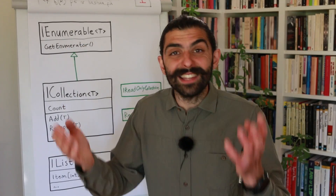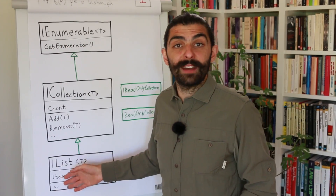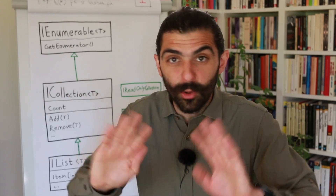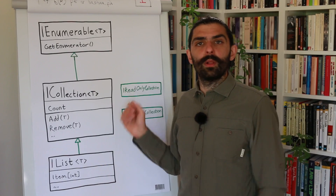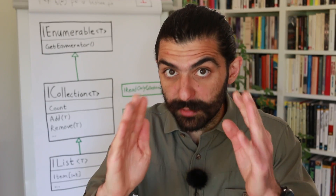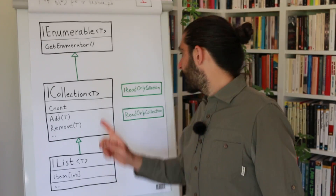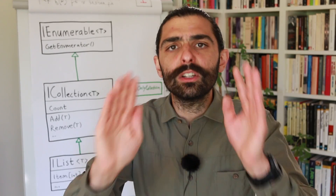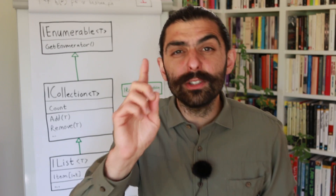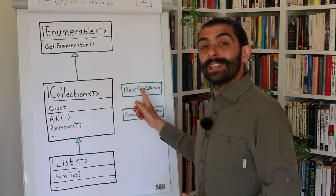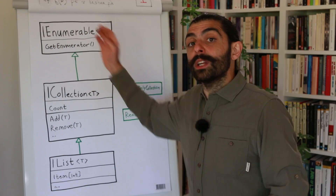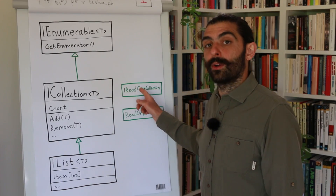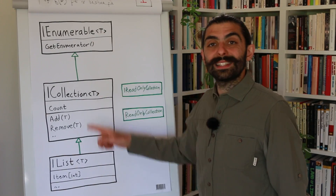At that level of abstraction we can't add or remove items and we have no idea these items are indexed, but we can enumerate them. So the conclusion in terms of Liskov Substitution Principle is still: a list is a collection which is an enumerable — makes perfect sense. We are getting closer to the violation of the Liskov Substitution Principle. But first, we have to look at an interface called IReadOnlyCollection. Without knowing anything else, just going by the name IReadOnlyCollection, where do you think the language designers chose to put that interface in this hierarchy? Which of these three interfaces do you think IReadOnlyCollection inherits from?